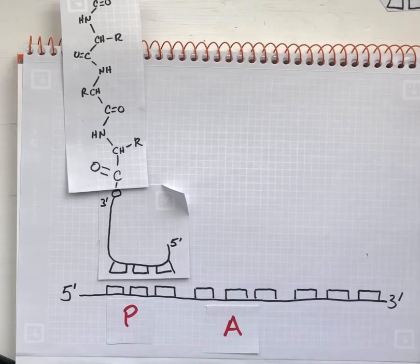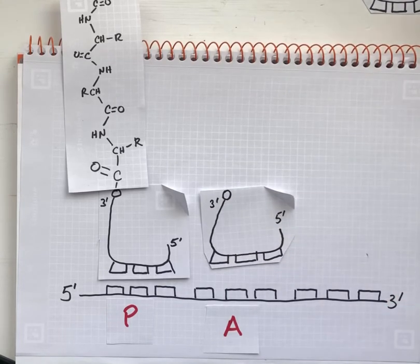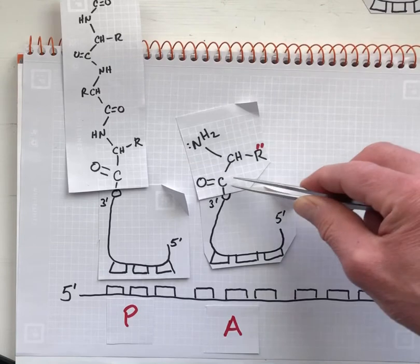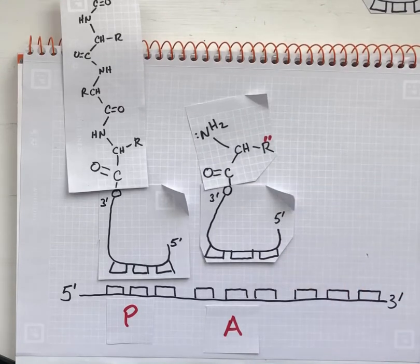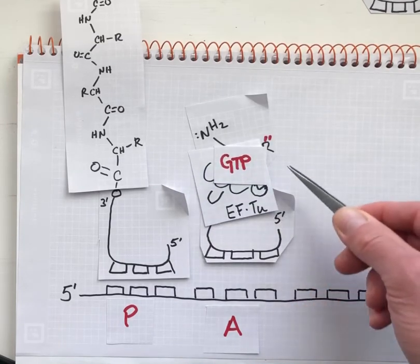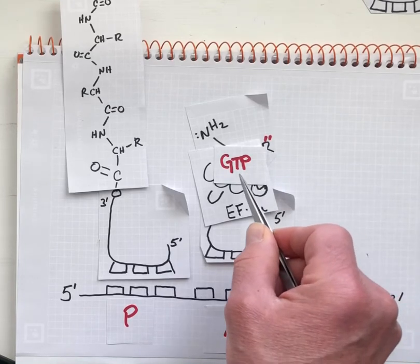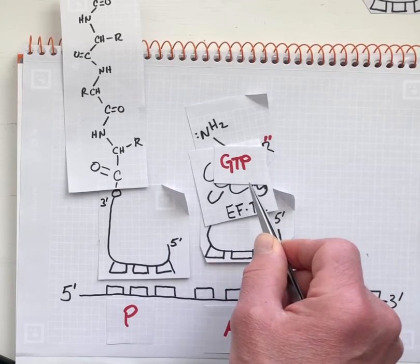We'll consider what is happening when the A site is getting sampled. Here I'm bringing in an aminoacyl tRNA, and it is not coming to the A site alone. It is coming in complex with elongation factor Tu, which is complex with GTP, the nucleotide GTP.